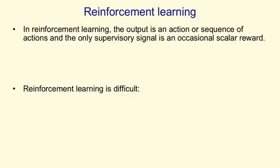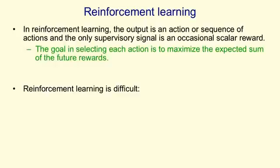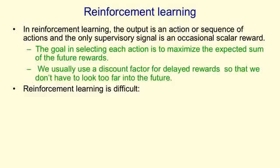In reinforcement learning, the output is an action or sequence of actions, and you have to decide on those actions based on occasional rewards. The goal in selecting each action is to maximise the expected sum of the future rewards. We typically use a discount factor so that rewards far in the future don't count for as much as rewards that you get fairly quickly.